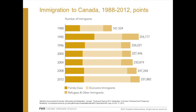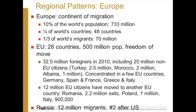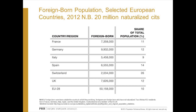Canada is different because it uses a point system to select migrants — most immigrants to the U.S. come because they have family members here, while in Canada the most come because one family member scored sufficient points. Europe is the continent of migration: it has only about 10% of the world's people, but a quarter of the world's countries and a third of the world's migrants. With the European Union's principle of freedom of movement, there is a lot of international migration in Europe. Switzerland has the highest share of foreign-born residents, and in most European countries the share is very similar to the U.S. figure of 13%.